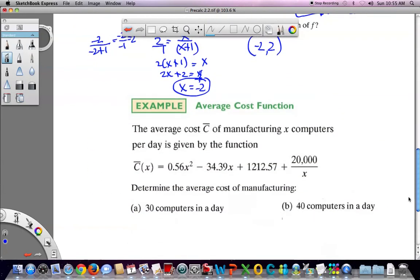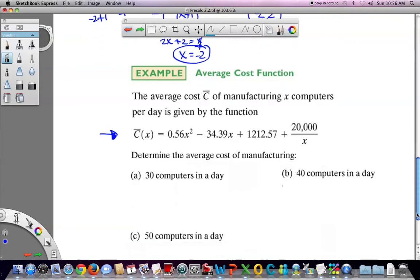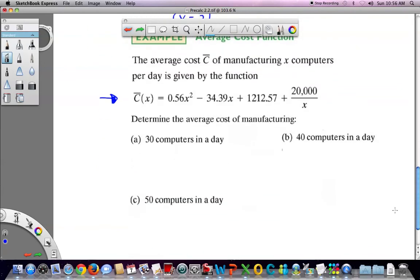And then finally, in terms of word problems, these equations get a little bit tricky. When you have word problems, just read carefully. It says the average cost, c with a bar so that's average, of manufacturing x computers per day is given by the function. And that appears to be a quadratic function. I don't think it is, because I have a division by x here. So that does something else to this. So it's not a quadratic. And determine the average cost of manufacturing 30 computers in a day, 40 computers in a day, or 50 computers in a day. Not sure why I'm asking you to do this three times.